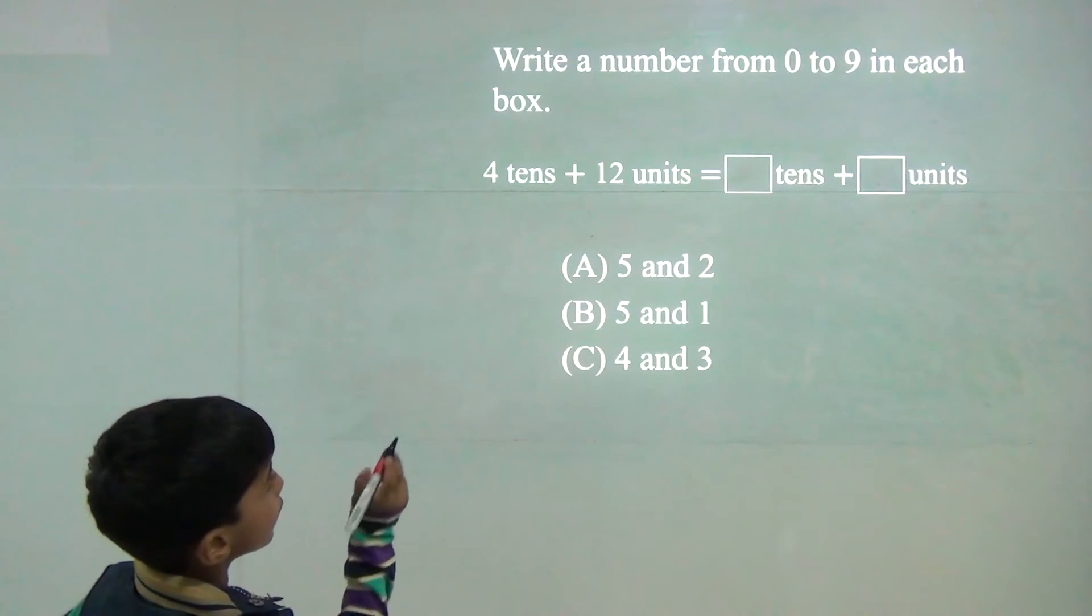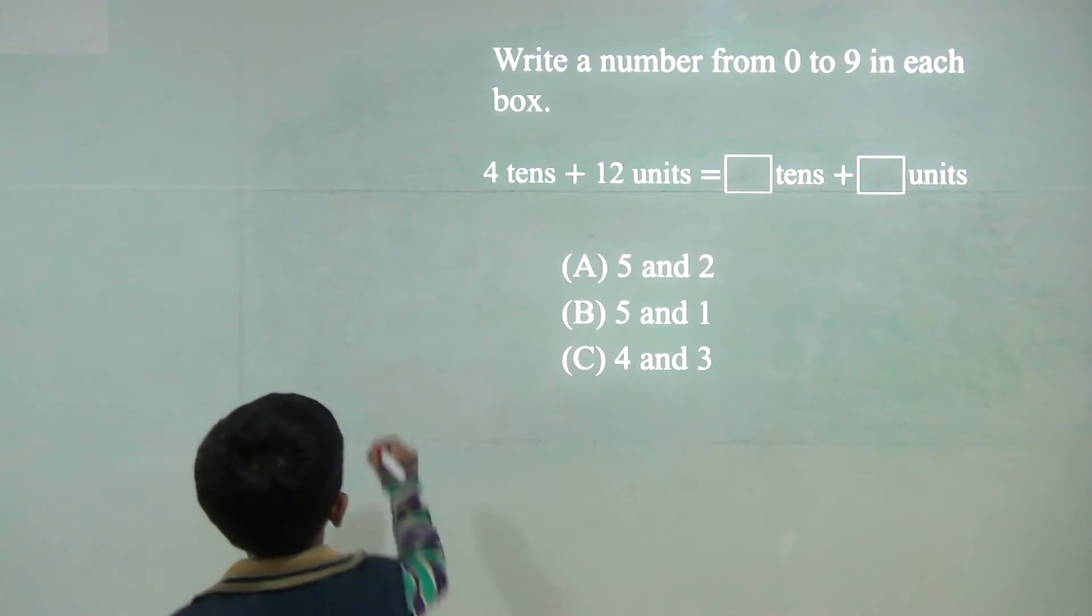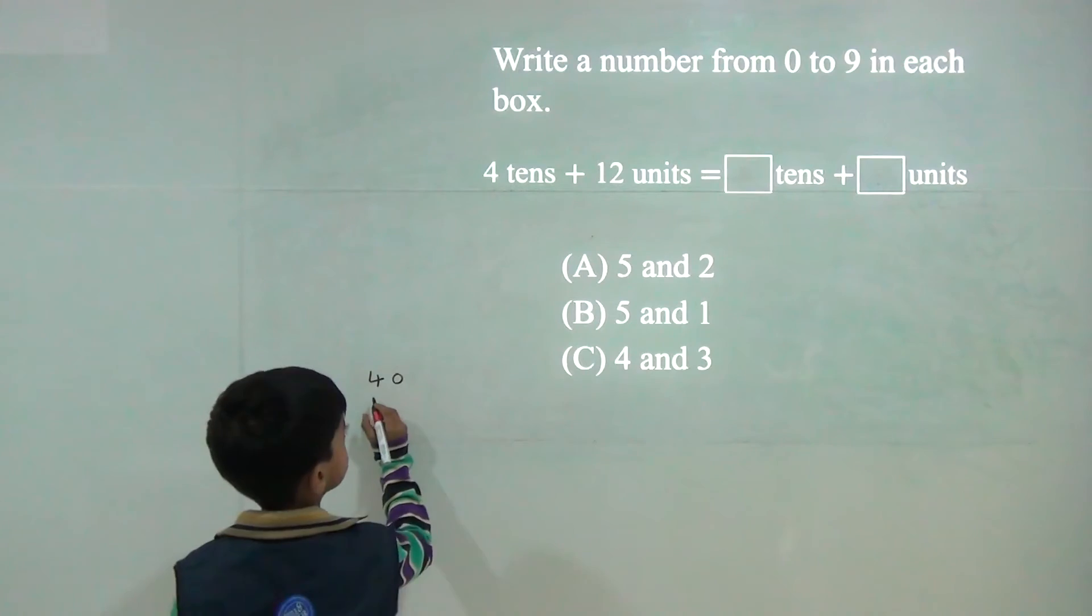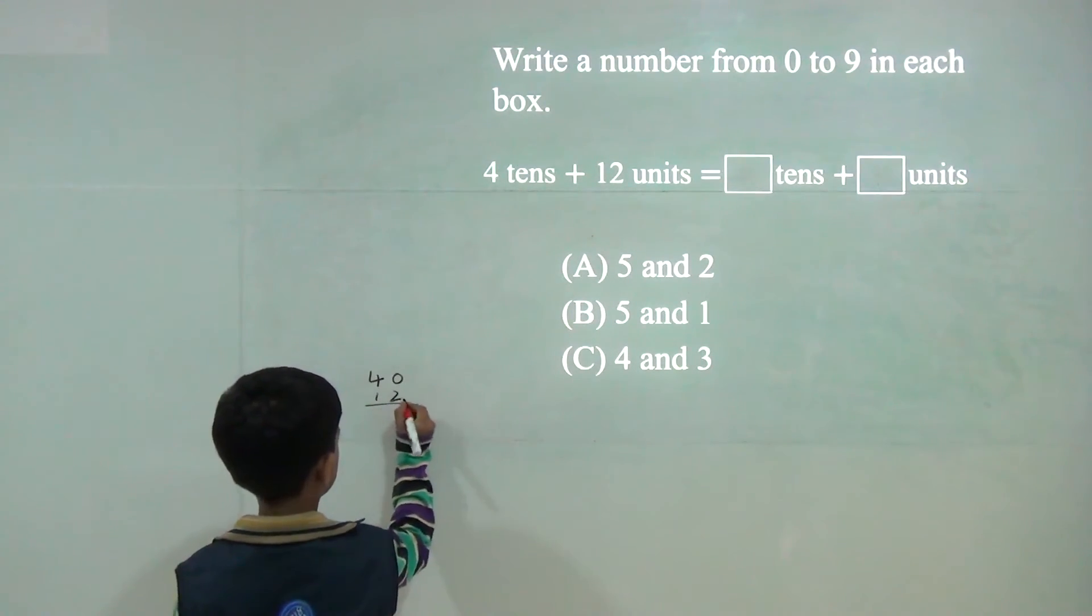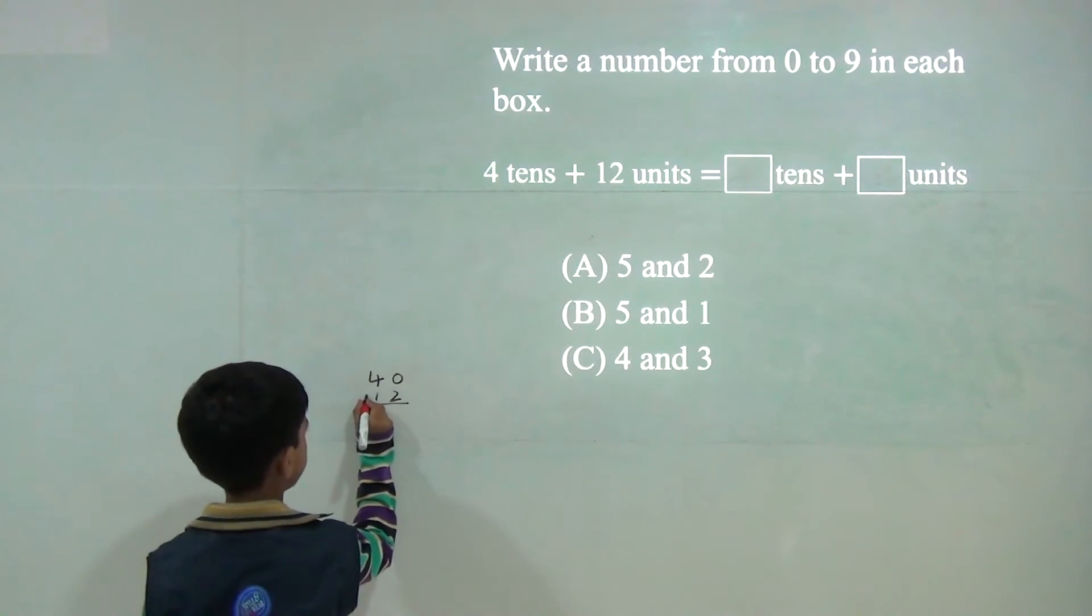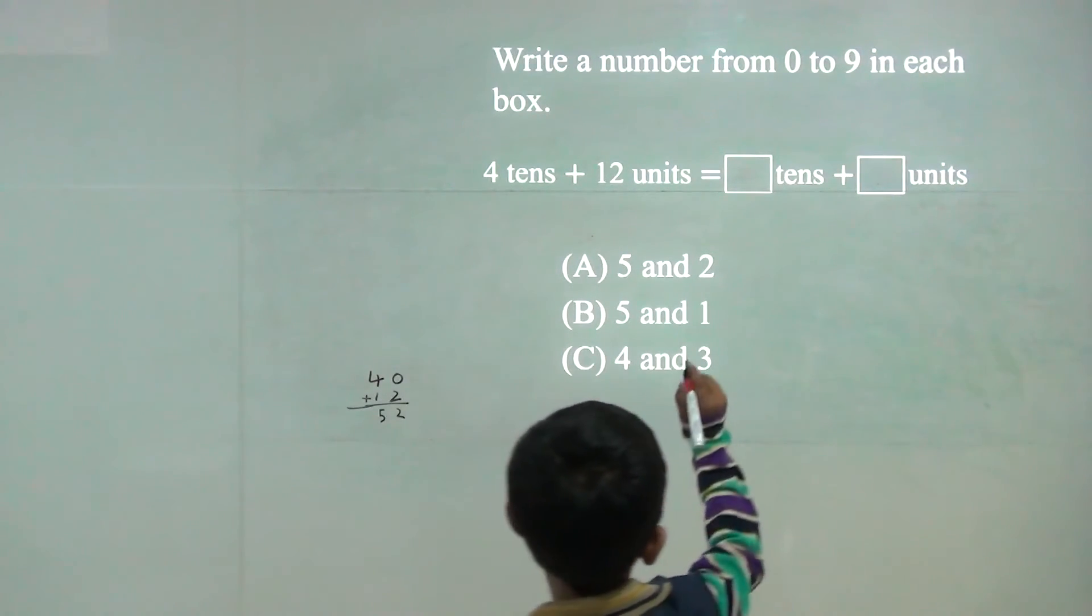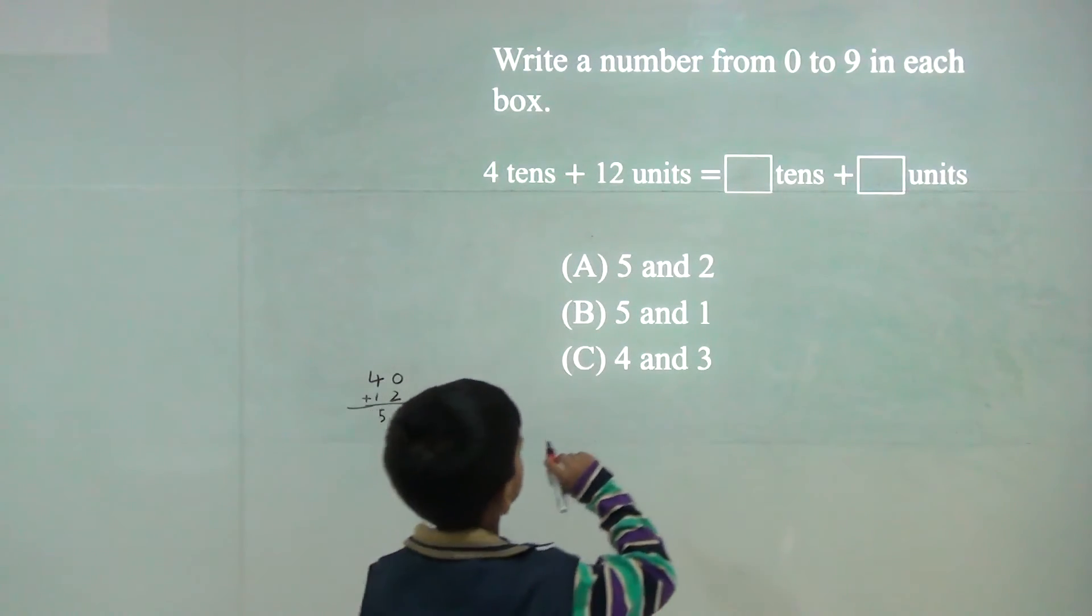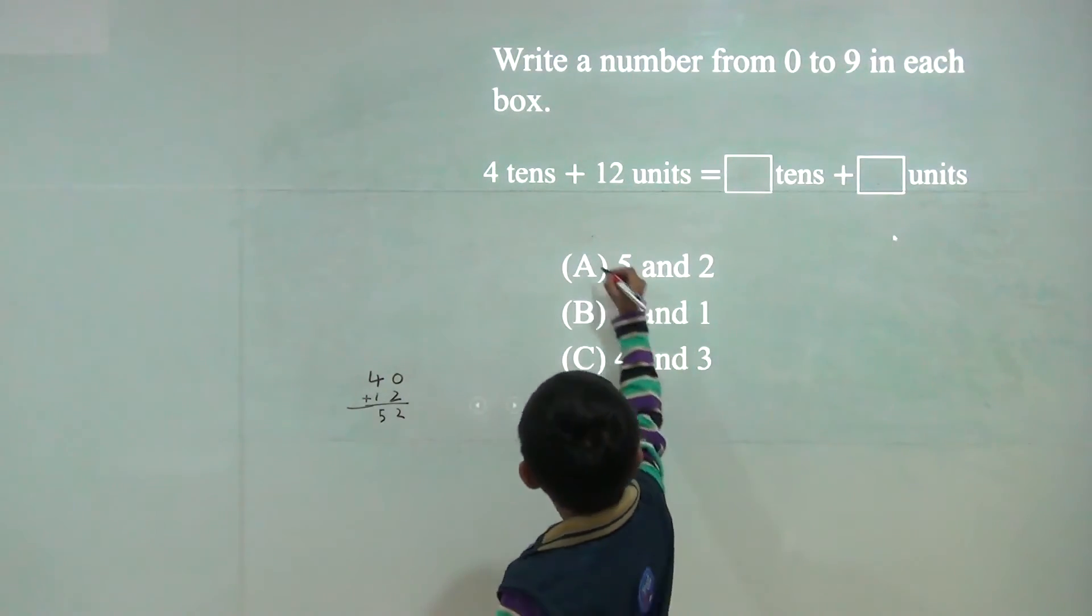Write the number from 0 to 9 in each box. Now 4 tenths is 40 and 12 units. So we will plus. Now 2, 5, 25, 52. So 5 tenths, 2 ones. 5 tenths, 2 ones. B.